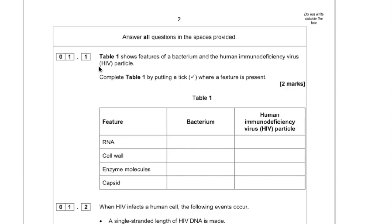Question one. You've been given a table showing features of a bacterium and of a HIV particle, and you've been asked to complete this table by putting a tick where a feature is present. I'm going to go through it feature by feature and think about whether or not that feature would be present.